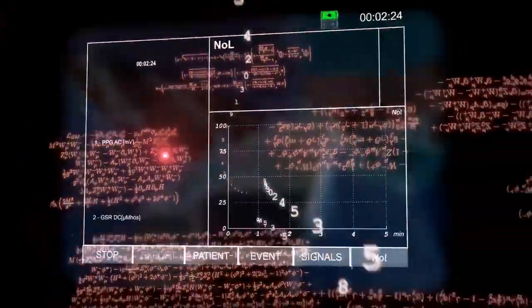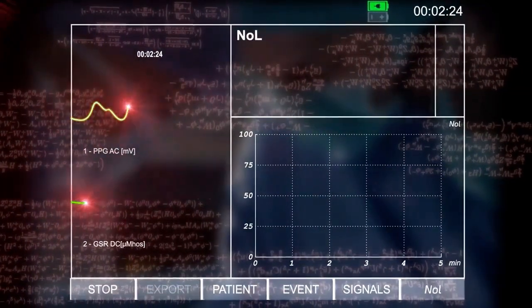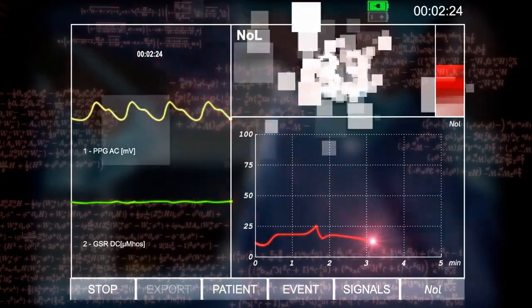Artificial intelligence algorithms and signal processing identify and analyze dozens of measurable changes and reflect the information into a single nociception-level index, the NoL.